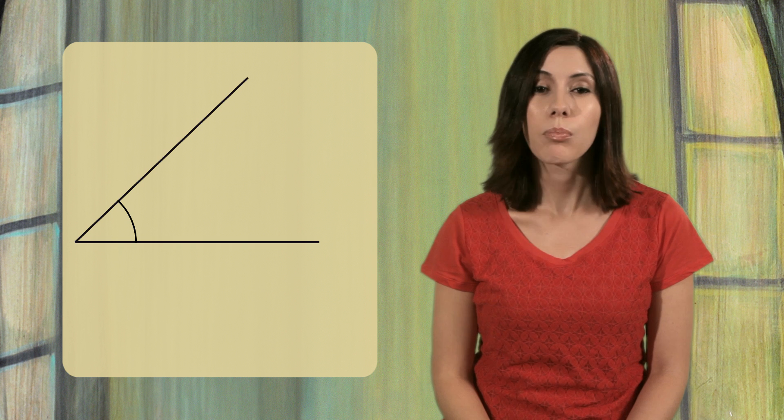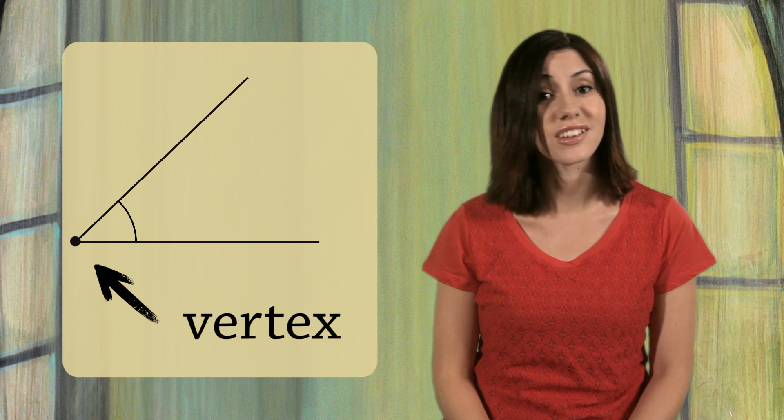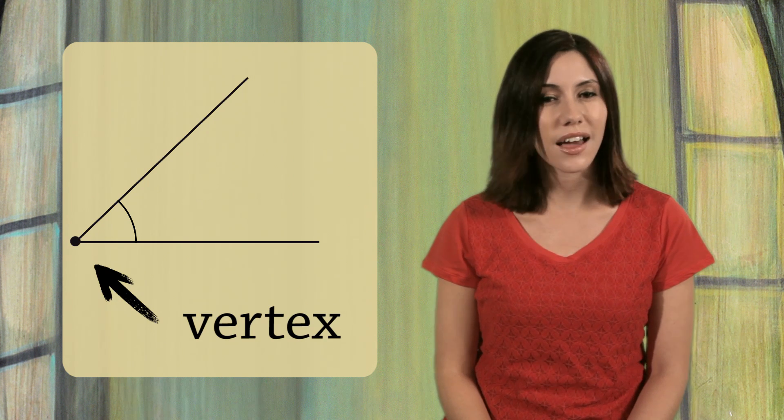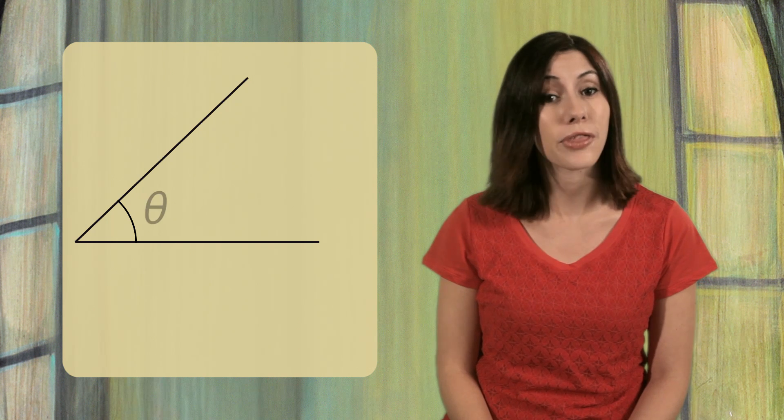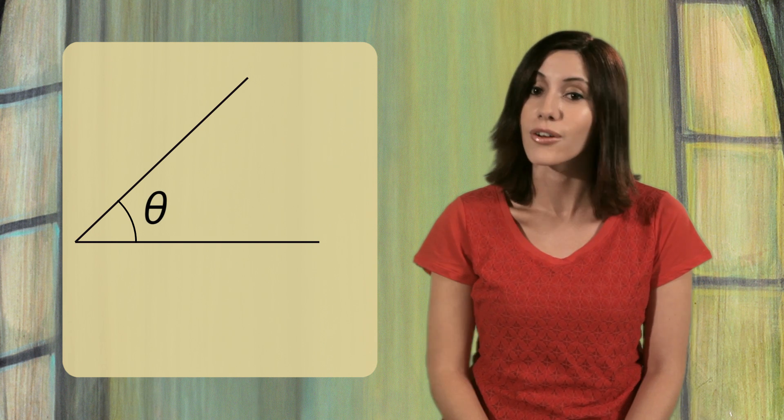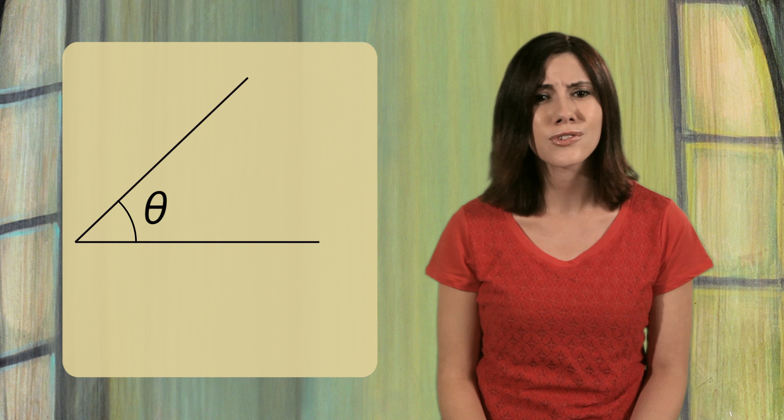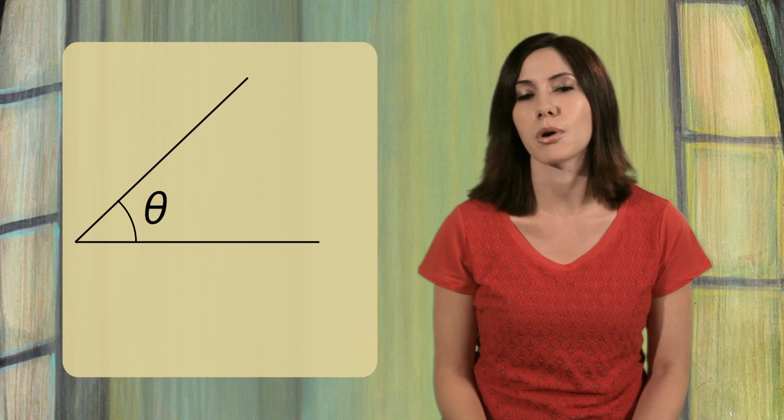When you draw two line segments to make an angle, the point where they meet is called the vertex. If you don't know the size of the angle, then it's common to use the Greek letter theta to represent the size of the angle. You may see other letters used for angles, but theta is the most common.